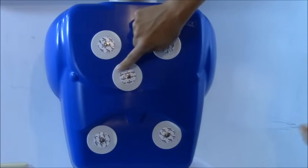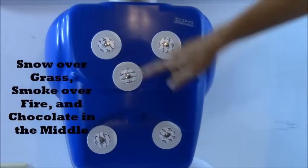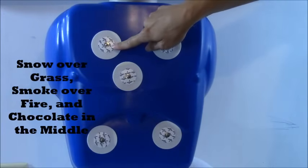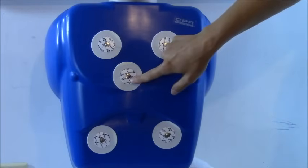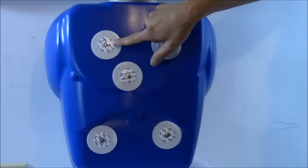And you are done. And then you'll connect your wires. So let's go over it again. You have snow over grass, smoke over fire, and then chocolate in the middle. So you'll connect your electrodes to this.